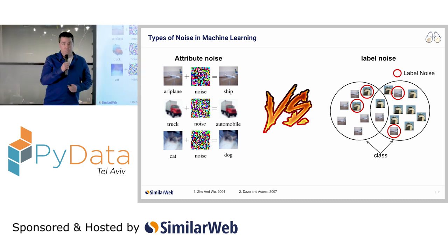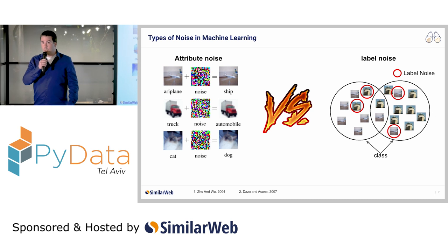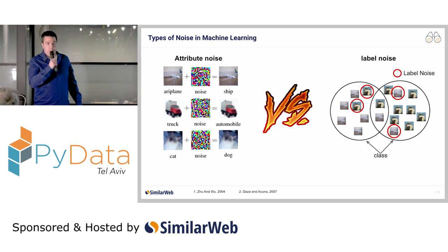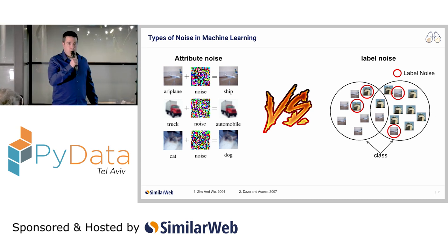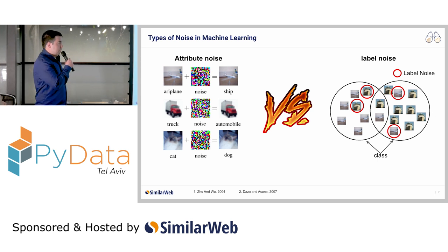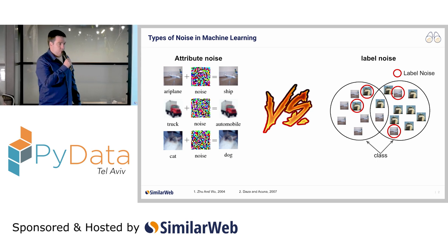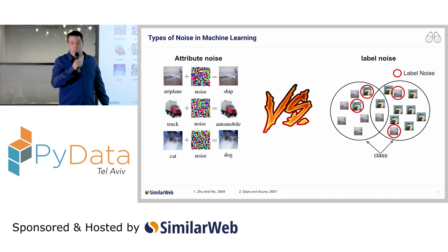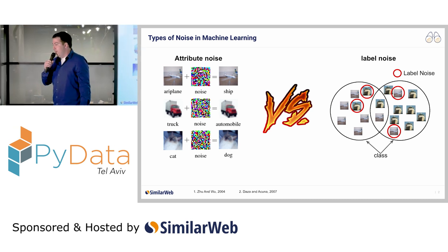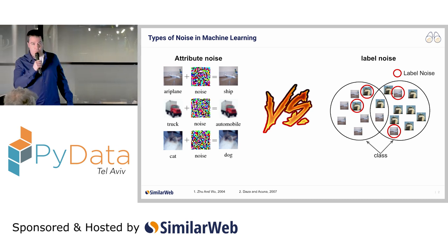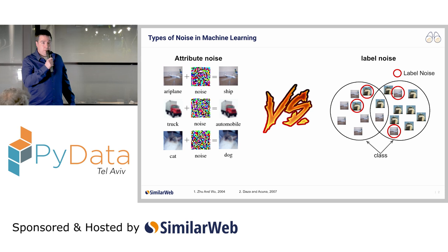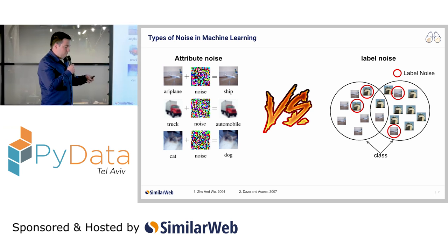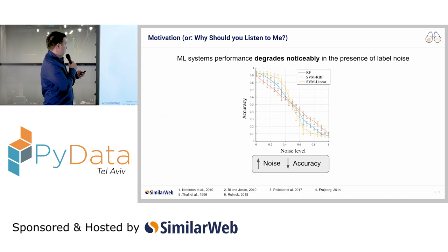Now think of a different situation in which not the attribute but the original label given to the instance is wrong. This is known as label noise. In general, when comparing the two, researchers have shown that label noise is much more harmful, and as such it is important to understand how to handle it in machine learning models and pipelines.